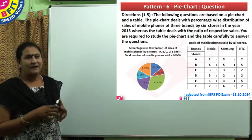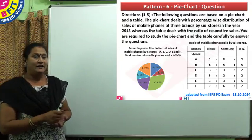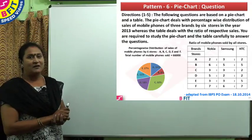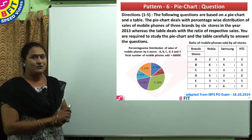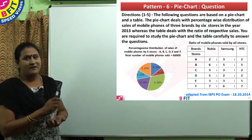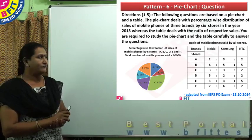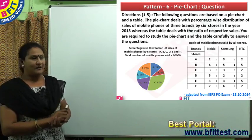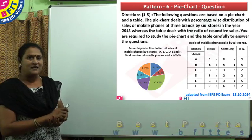Friends, we will see the next pattern: pie chart. So in data interpretation, the data will be given in pie chart format. Normally when the data is given in pie charts, there will be two pie charts, each having part of the data. Sometimes part of the data will be given in pie chart along with a line graph, bar diagram, or table format. Here we have an example where we have a pie chart along with a table.